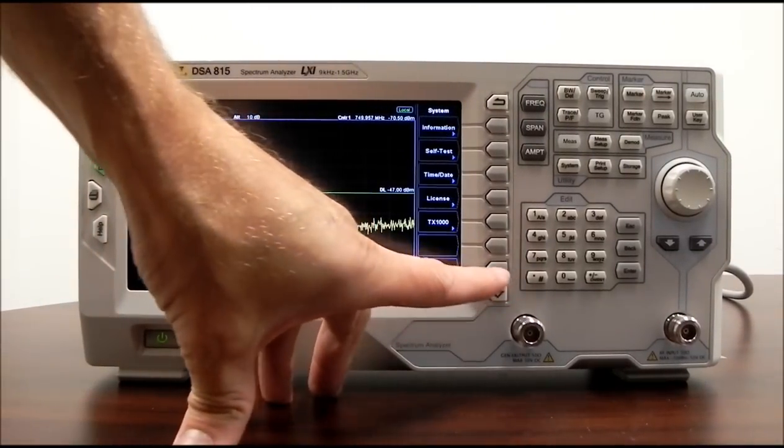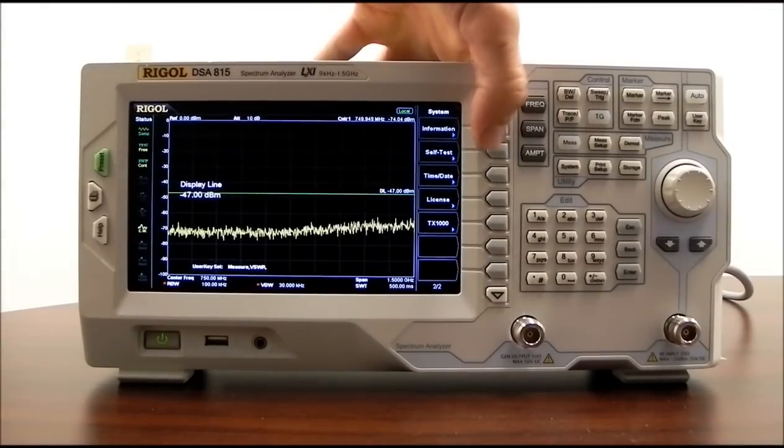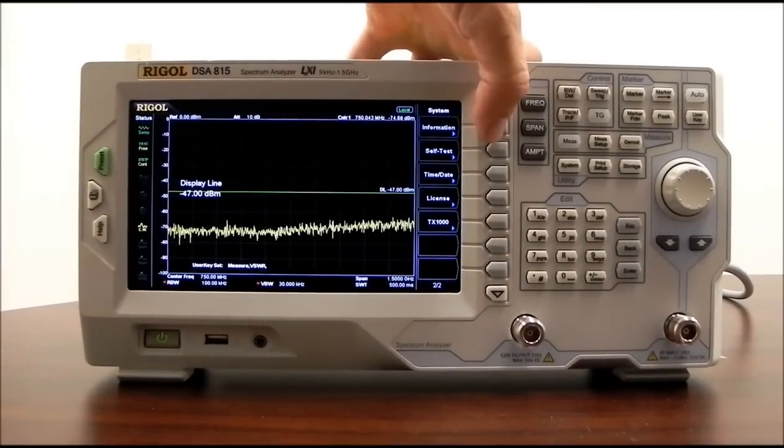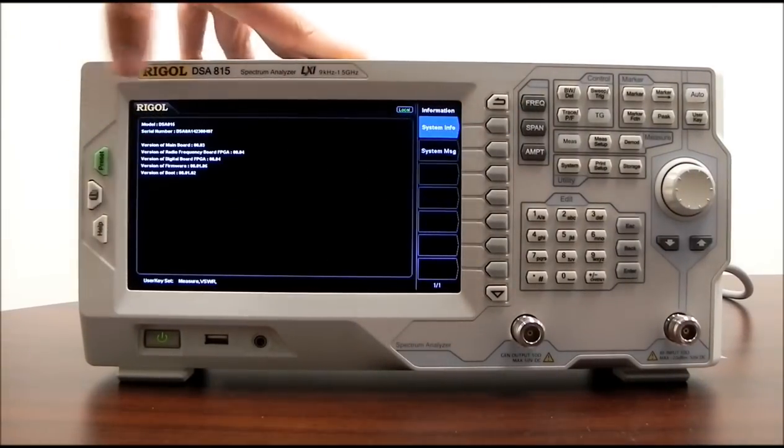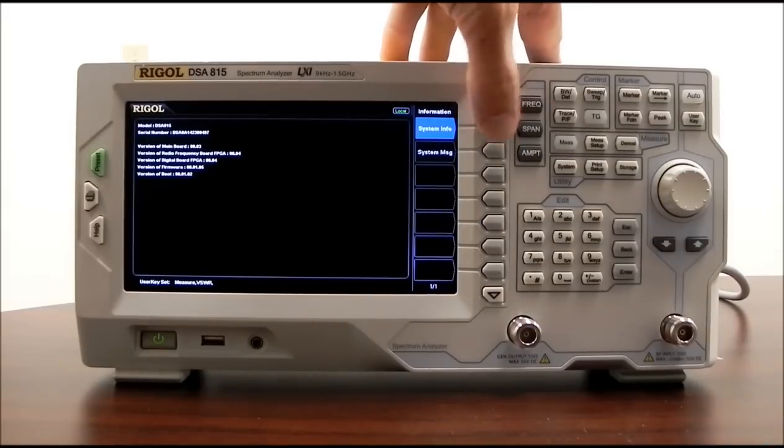Then we can go on to system information. Again, now we're on page two for the system file. System information is going to give us versions of the boards as well as any firmware and any errors that we may have.